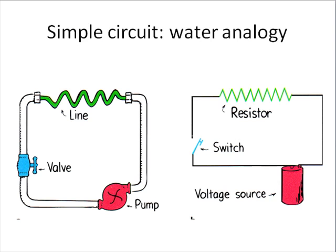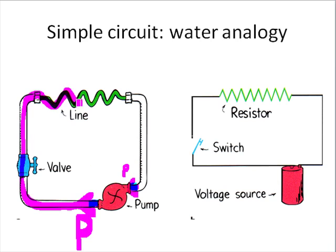In a circuit, the difference in potential between two points is of more significance than the actual potential at a point. Like in a water circuit, it's the difference in pressure between two points that makes the water move. A pump creates high water pressure at one end and low water pressure at the other, driving water around the whole circuit.